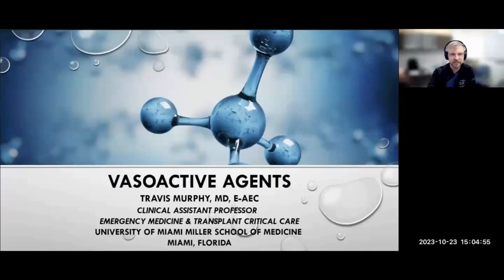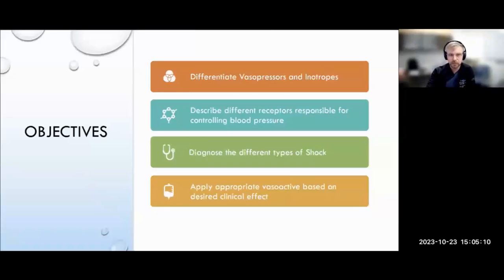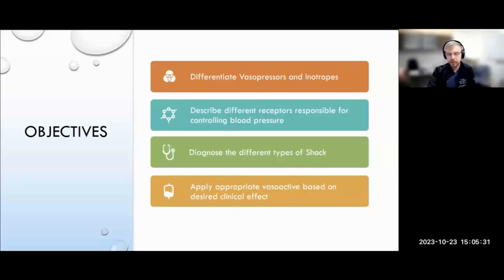Thanks, Shabrin. Thank you for a very nice introduction. I'm looking forward to talking with everybody about something that is going to be pertinent to the rest of your career in handling any kind of critically ill patients. So vasoactive agents and when and why to use them. We're going to talk about the differentiation of the lingo between what a vasopressor is or an inotrope, describing where these are intended to work and the receptors that we're targeting, and different reasons to use different agents. We'll go through a brief discussion of the different types of shock and then applying the appropriate vasoactive medication based on what we're trying to achieve and what's going on with the patient.